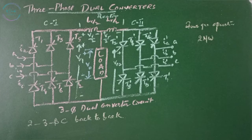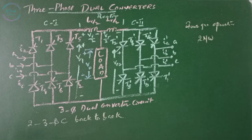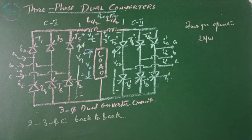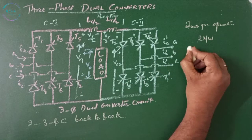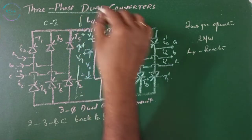As the instantaneous voltage differences exist between the output voltages of the converters, a circulating current flows through the converter. The circulating current is normally limited by a circulating reactor L.